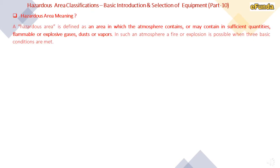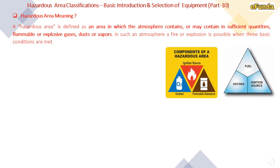Hazardous Area Meaning: a hazardous area is defined as an area in which the atmosphere contains or may contain in sufficient quantities flammable or explosive gases, dust or vapours. In such an atmosphere a fire or explosion is possible when three basic conditions are met — oxidizer, ignition source and flammable substance — forming a triangle of fuel, oxygen and ignition source, creating chances of flammable or explosive concentration.